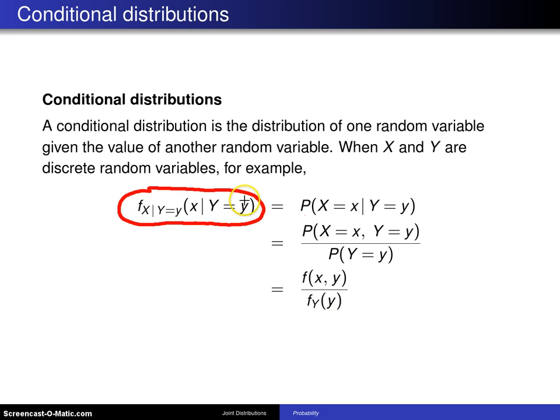So this thing which we are calling the conditional distribution, and again for discrete random variables this will be the conditional probability mass function, is going to be the joint divided by the marginal. And that leads to the following definition.